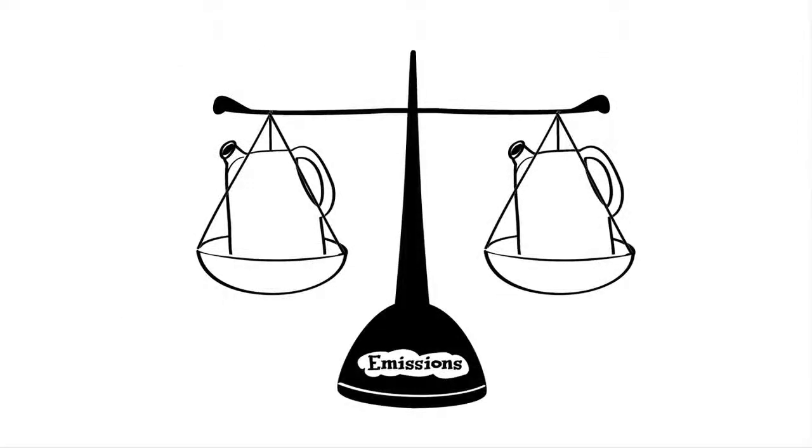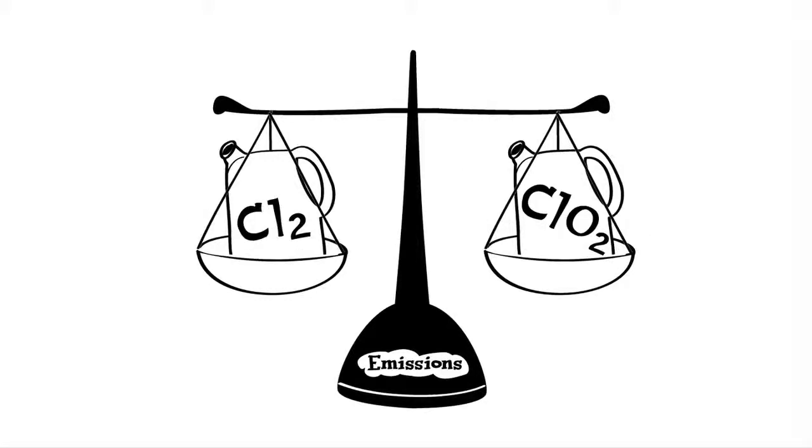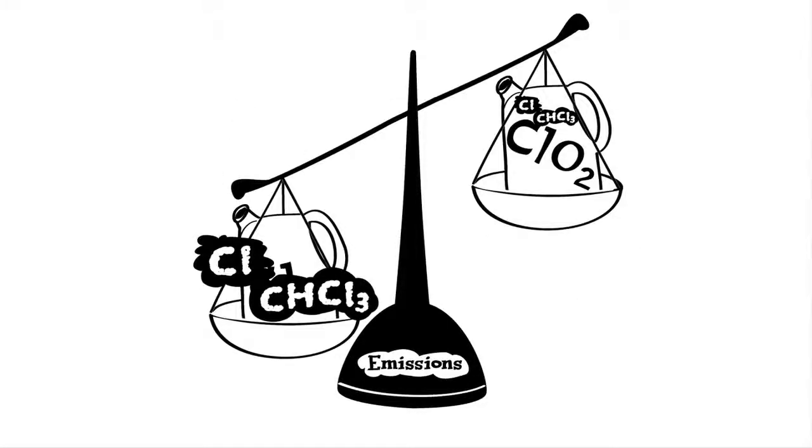Let's talk about chlorinated compound trade-offs and co-benefits in relation to emissions to air. Historically, the use of elemental chlorine, or Cl2, for bleaching, led to releases of chlorine and chloroform from the bleach plant. The change from using elemental chlorine to using chlorine dioxide-based bleaching, or ECF, dramatically reduced emissions of chlorine and chloroform.